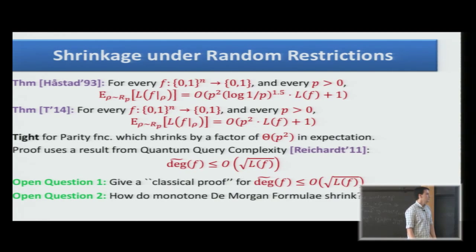The second open question is, how do monotone formulas shrink? A monotone formula—we don't allow negation on the leaves. We just allow variables, ANDs, and ORs. It seems that such formulas shrink by a more significant factor. There is a conjecture even what is the exact factor. However, we don't know how to prove it yet. This will have implications to the formula size of the majority function in this model.